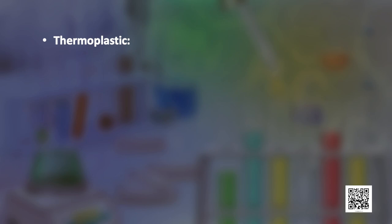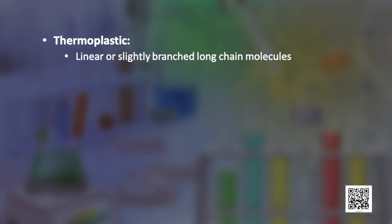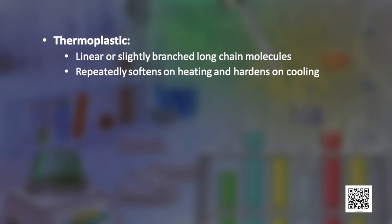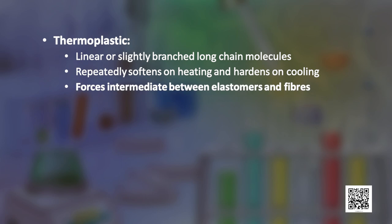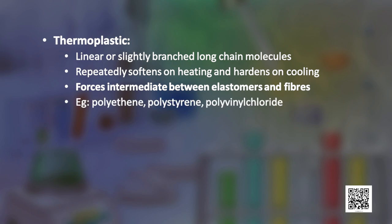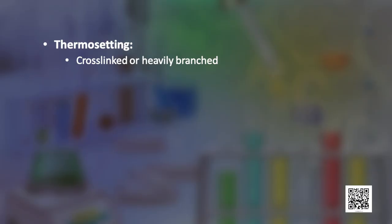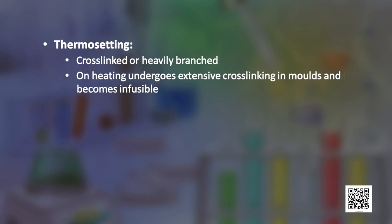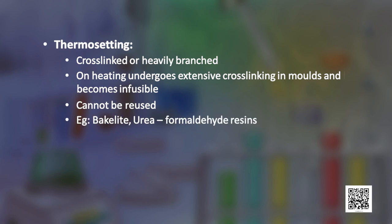Thermoplastic polymers are linear or slightly branched long-chain molecules capable of repeatedly softening on heating and hardening on cooling. These polymers possess intermolecular forces intermediate between elastomers and fibers. Some common examples are polythene, polystyrene, and polyvinyl chloride. Thermosetting polymers are cross-linked or heavily branched molecules which, on heating, undergo extensive cross-linking in molds and become infusible and thus cannot be reused. Common examples are Bakelite and urea-formaldehyde resins.